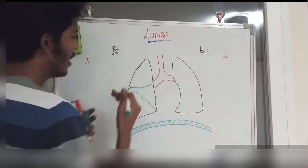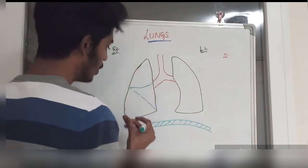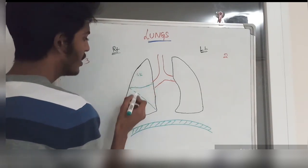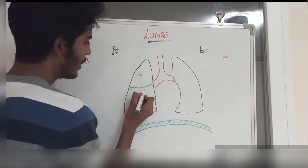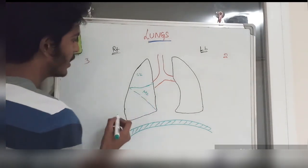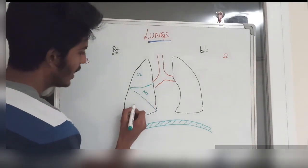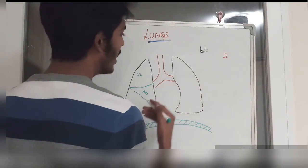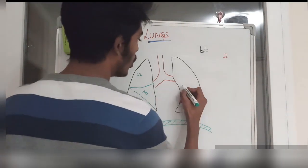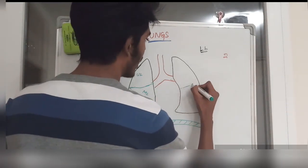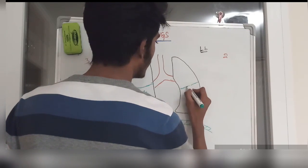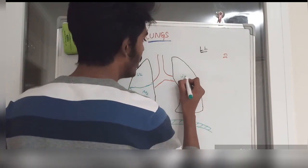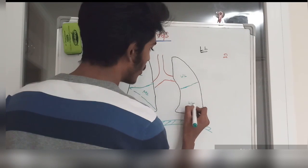On the right side, we have the right upper lobe, the right middle lobe, and the right lower lobe. The left lung has only two lobes, divided by one oblique fissure: the left upper lobe and the left lower lobe.